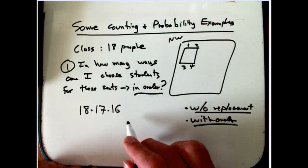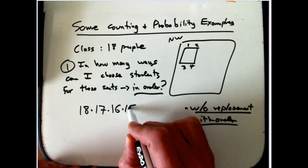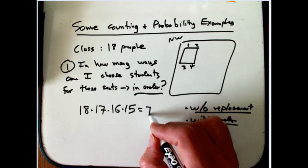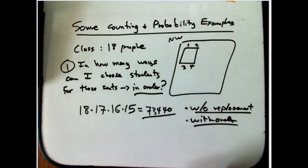Times 17, times 16, because that's how many are available for the third slot, the third chair, and then times 15. And that turns out to be 73,440. That's a lot of different ways I could do that.